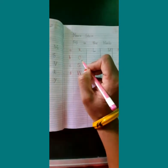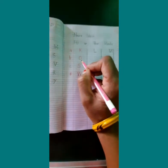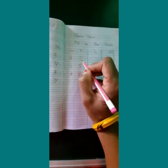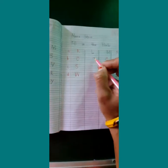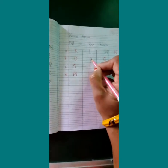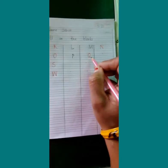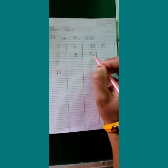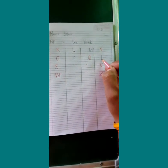Now we will come to the next line. What letter is this children? O. After O children, P. Now Q is written children. Now we will write R.